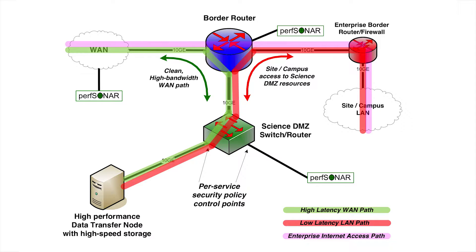The enterprise traffic — the commodity traffic — doesn't traverse the Science DMZ at all. The wide area data transfers to the Science DMZ don't traverse the commodity path other than the shared science network backbone in the wide area and the border router.